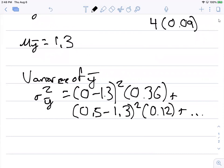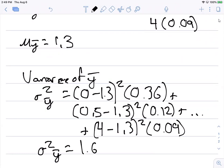times 0.12, plus, and then again dot dot dot, lots of things in between here, plus 4 minus 1.3 squared times 0.09. And so in this case, sigma squared sub y-bar is going to equal 1.6050.